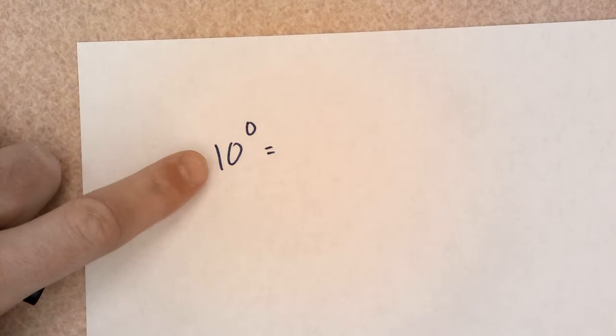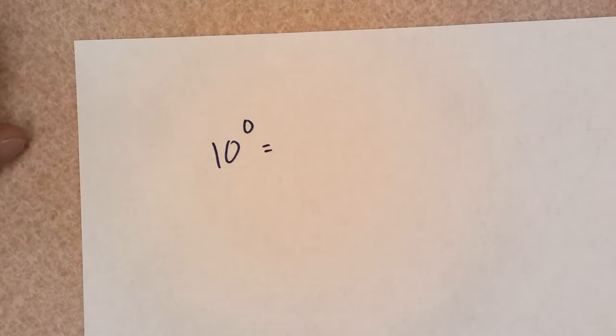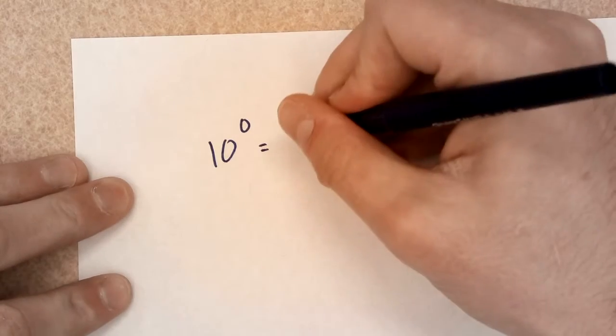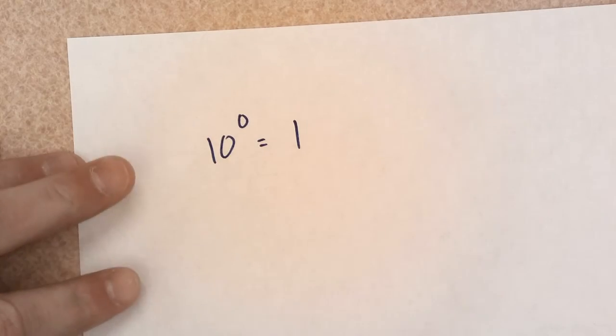Ten times itself zero times. It's not 10 times zero, that's not what this is. It's 10 times itself a zero amount of times. Anyway, I can't wrap my brain around it, but it's just something that I know is one. It's equal to one.